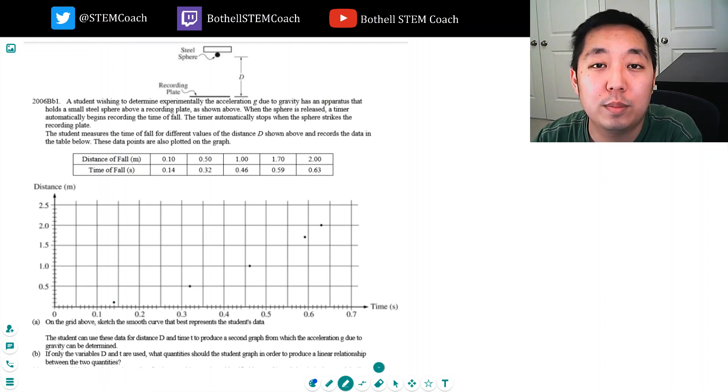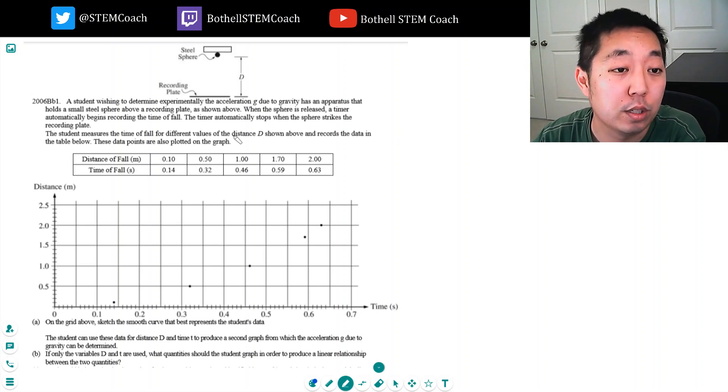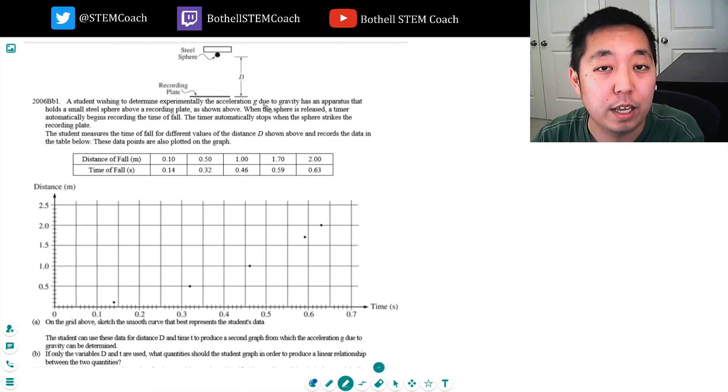Hey guys, this is Alan with Bothell STEM Coach and we are continuing on with the AP Physics 1 kinematics questions here. So again, this is from the AP Physics B exam but it's still good practice. You should be able to do these kinds of problems and this is like an experimental design problem which is actually pretty similar to some of the AP Physics 1's where they ask you to design an experiment, but in the past they've had you analyze it a little bit.